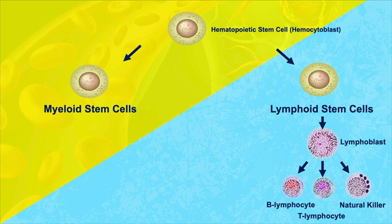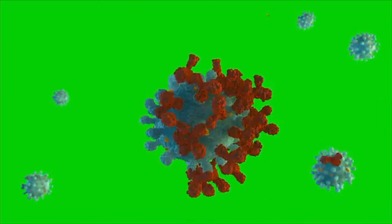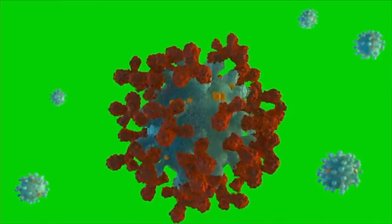Back to the B cells and the T cells — these are the white blood cells involved in the immune system. B cells are the ones that produce antibodies that help to protect us from things like viruses and bacteria. We'll get into exactly how antibodies do their work in another video. T cells, on the other hand, are involved in what's called cell-mediated immunity. We'll get into the differences between the two in a later video.